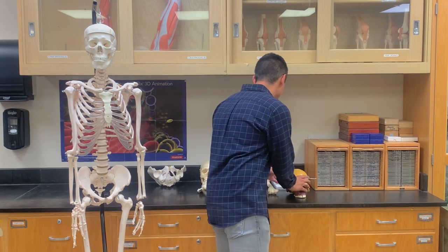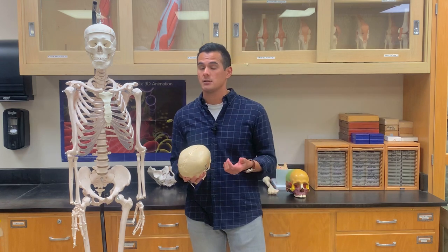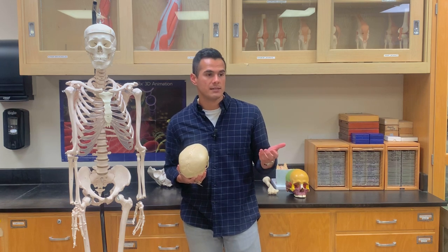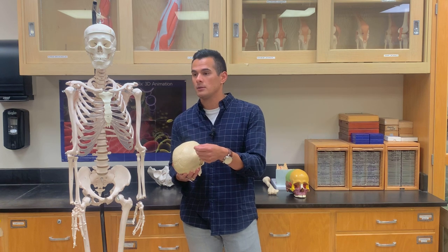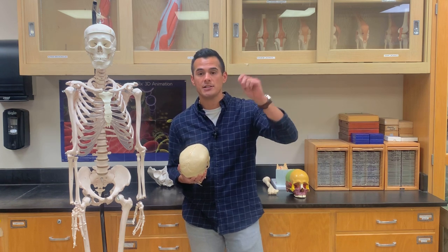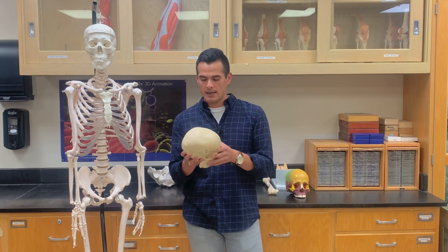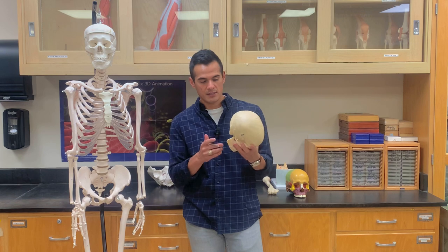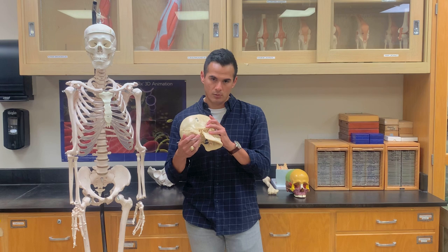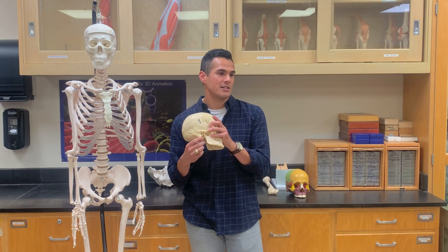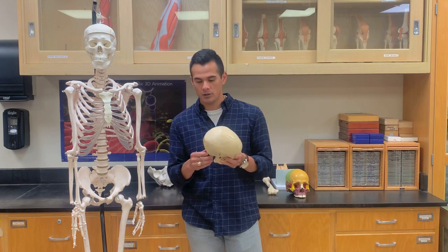That's for the different types of bone classifications. The next thing we need to discuss is bone markings. The significance of bone markings is that once we start getting to muscles, we'll learn where muscles attach to bones, and where ligaments attach. For instance, this is what's known as the mastoid process, and a muscle known as the sternocleidomastoid attaches here — that's why we go out of the way to learn all of these different processes.